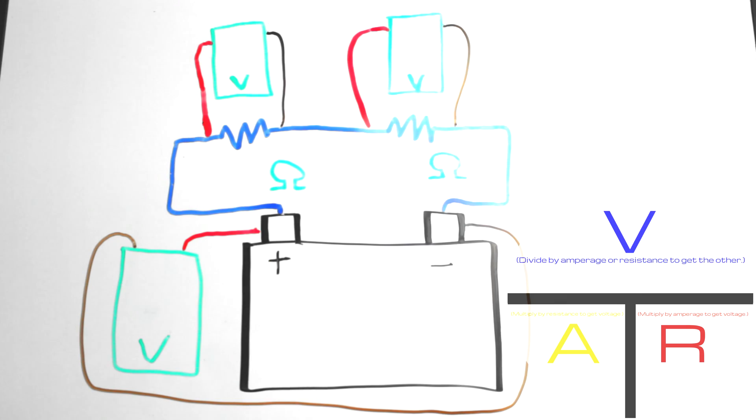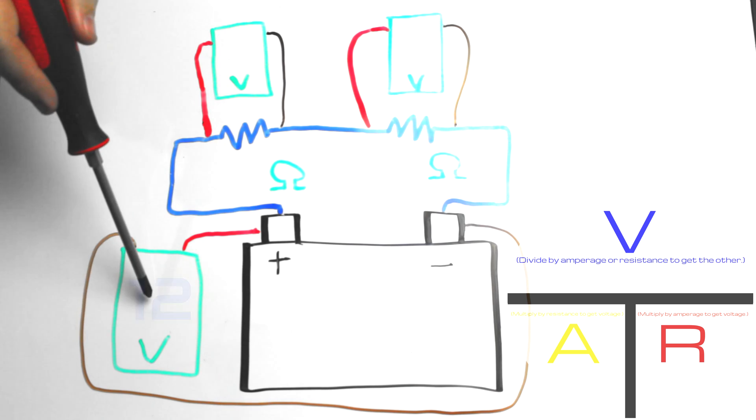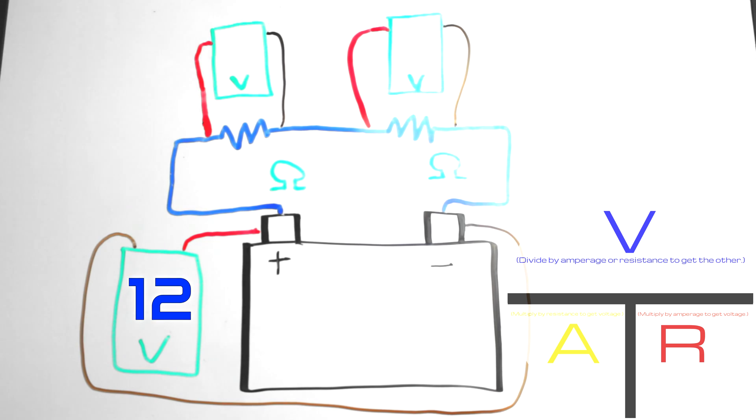Alright so we'll get rid of all those numbers. We're still going to use a 12 volt battery. So we're going to get the same reading here. This is going to be 12 volts. But we're going to have two different resistors this time. This is a 4 ohm resistor and this is a 2 ohm resistor. That's a total of 6 ohms through here. So if we do the math we'll end up with 2 amps.